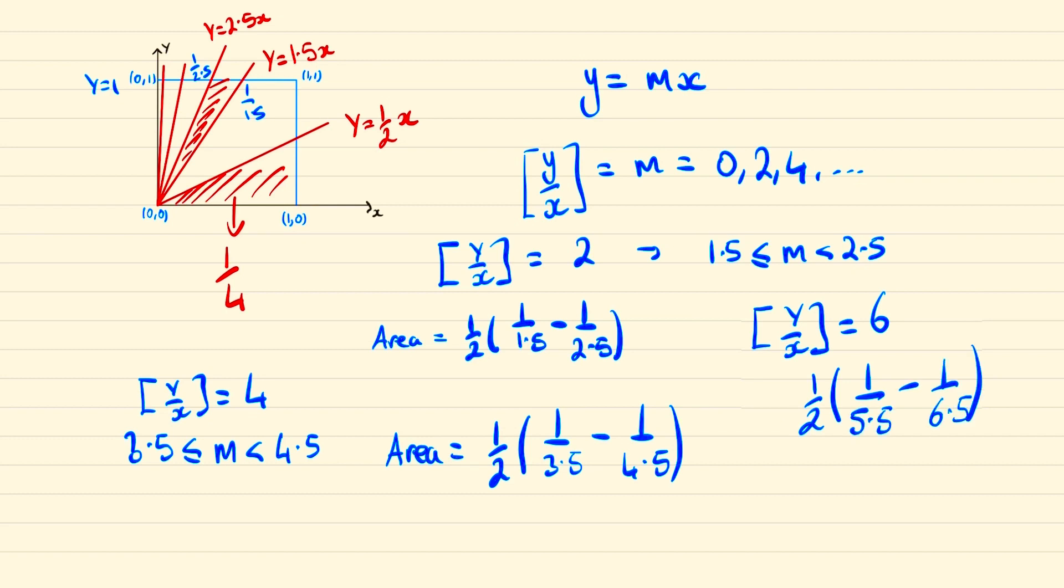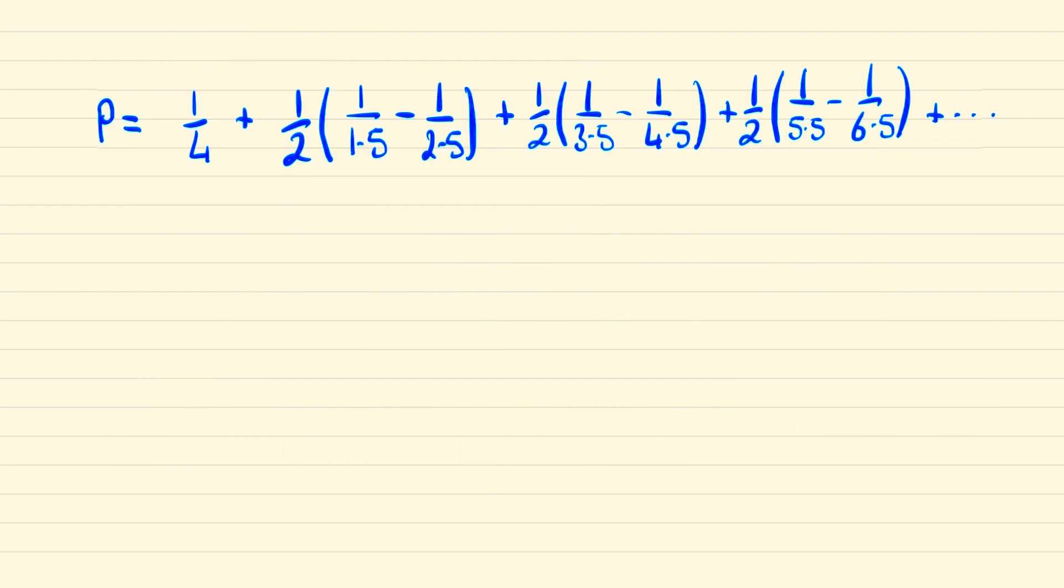And so we can represent the probability as the sum of these infinitely many triangles. We can continue simplifying this down, so this becomes 1/4 plus 1/2, and then this will be 2/3 minus 2/5 plus 2/7 minus 2/9. By taking out a factor of 2 from our infinite sum, this becomes 1/4 plus 1/3 minus 1/5 plus 1/7 minus 1/9 and so on.